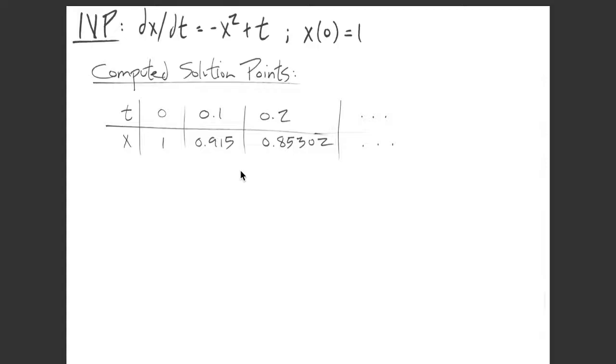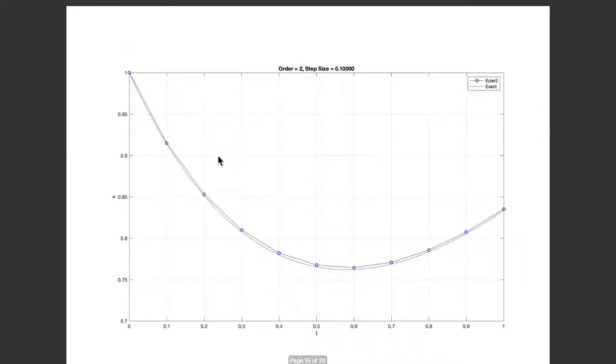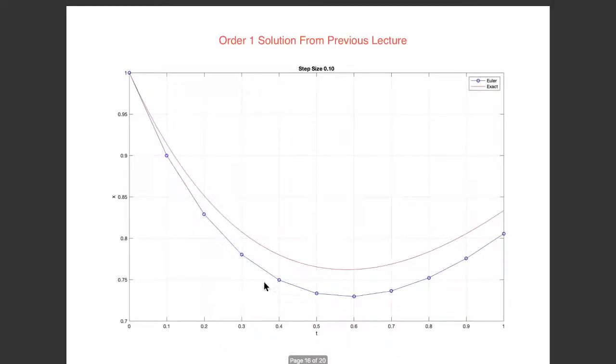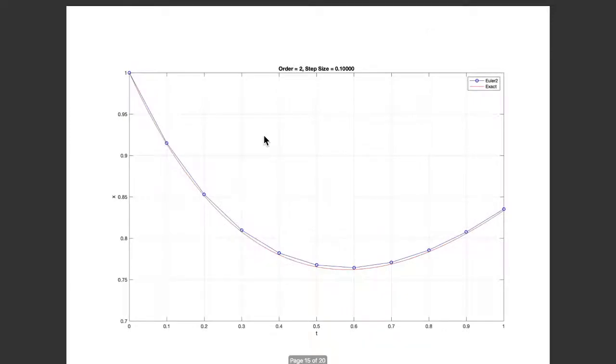I computed a few more points using MATLAB. Here in blue is the order 2 Euler method with step size 0.1 going to time t = 1. That's not a bad approximation. If you compare to the order 1 method with step size 0.1 we saw last time, the order 2 method is leaps and bounds better.